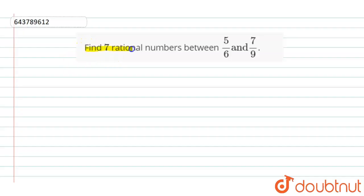Find seven rational numbers between 5/6 and 7/9. So here we have two numbers given: 7/9 and 5/6.